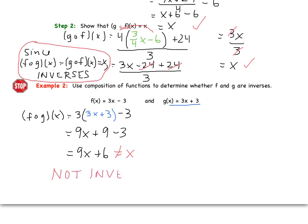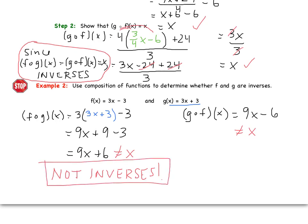If you were to have checked the other scenario, you should have found that g of f of x simplifies to 9x minus 6, which, again, is not equal to x. So we would make the same conclusion that these are not inverses of one another.